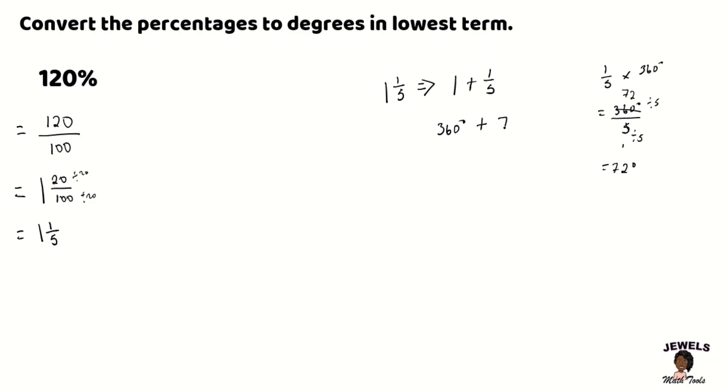So we'll be adding 360 to 72 degrees and 360 when added to 72 degrees we will again see that we get our 432 degrees.